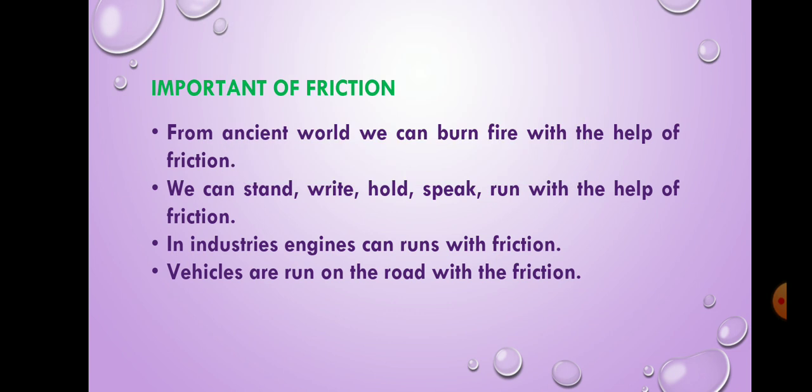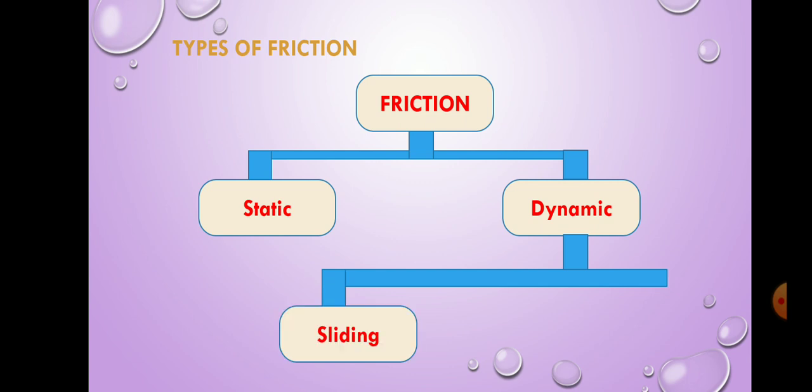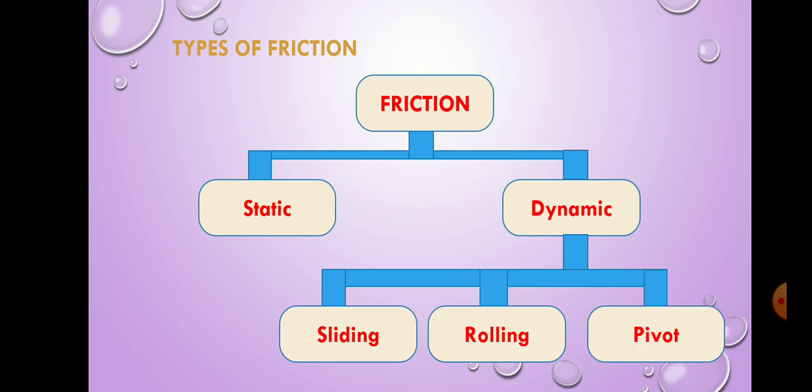Now move on to our next topic. Types of friction. The main two types of friction are static and dynamic. Then the dynamic friction is also divided in three categories. Sliding friction, rolling friction, and pivot friction.